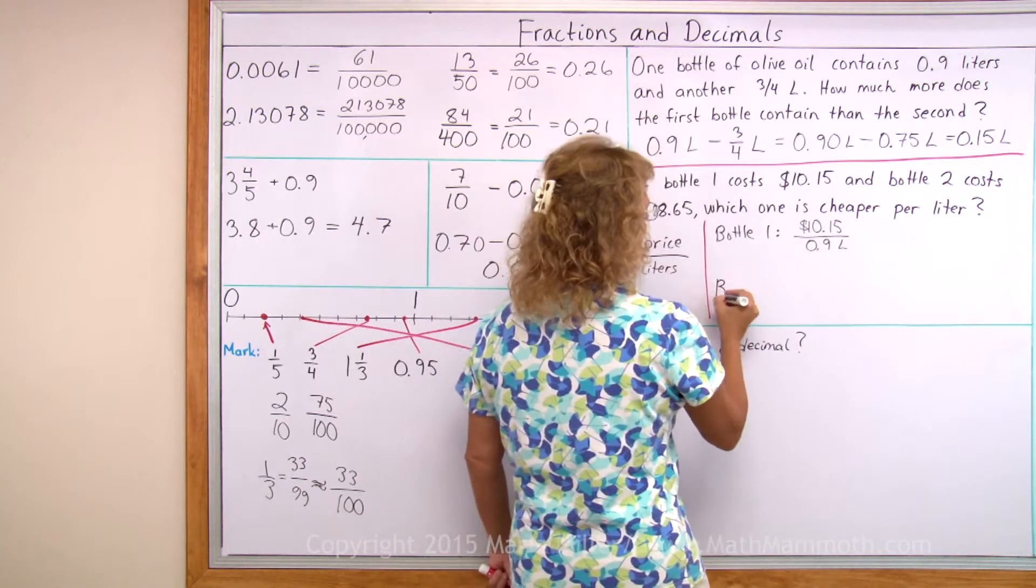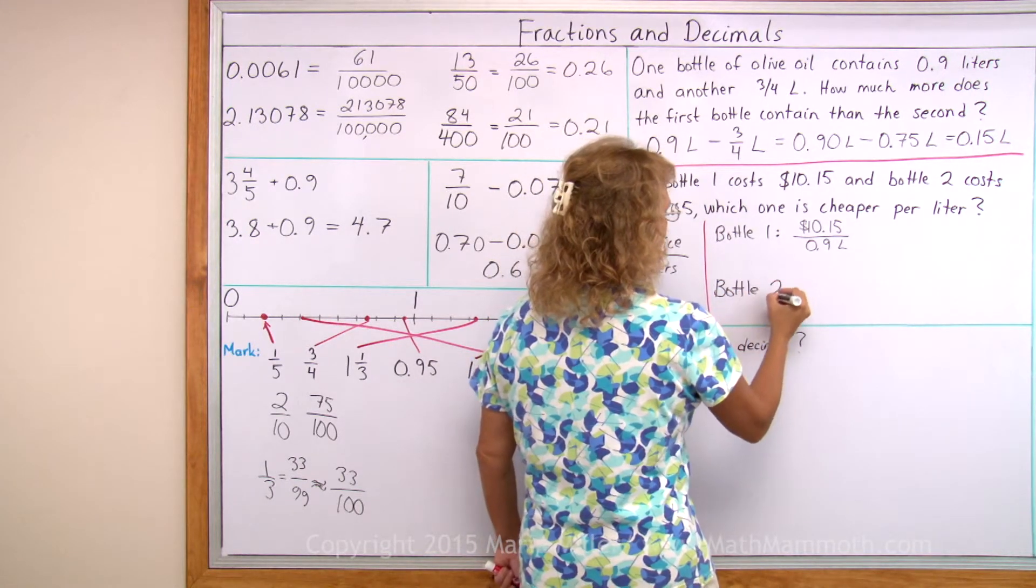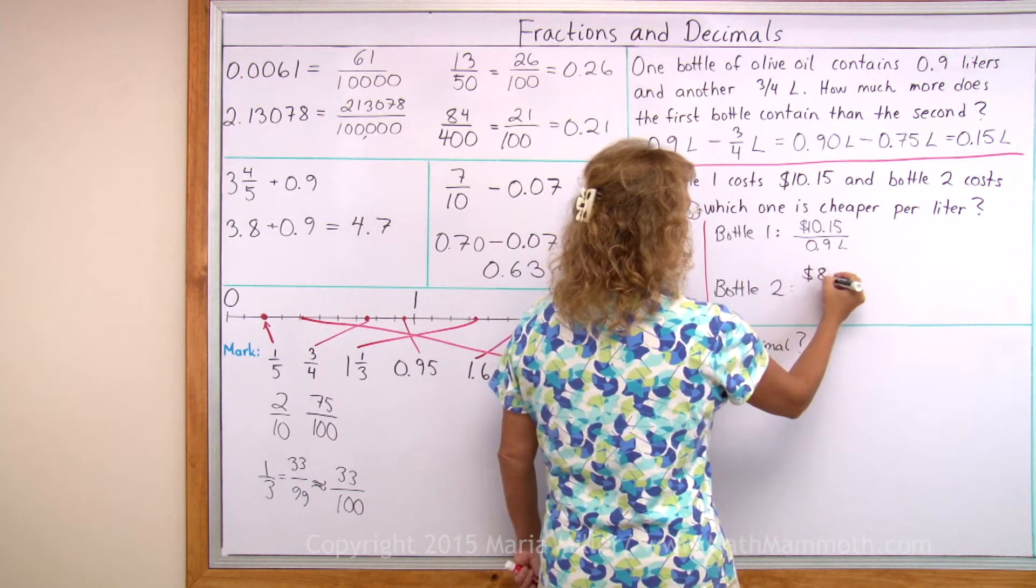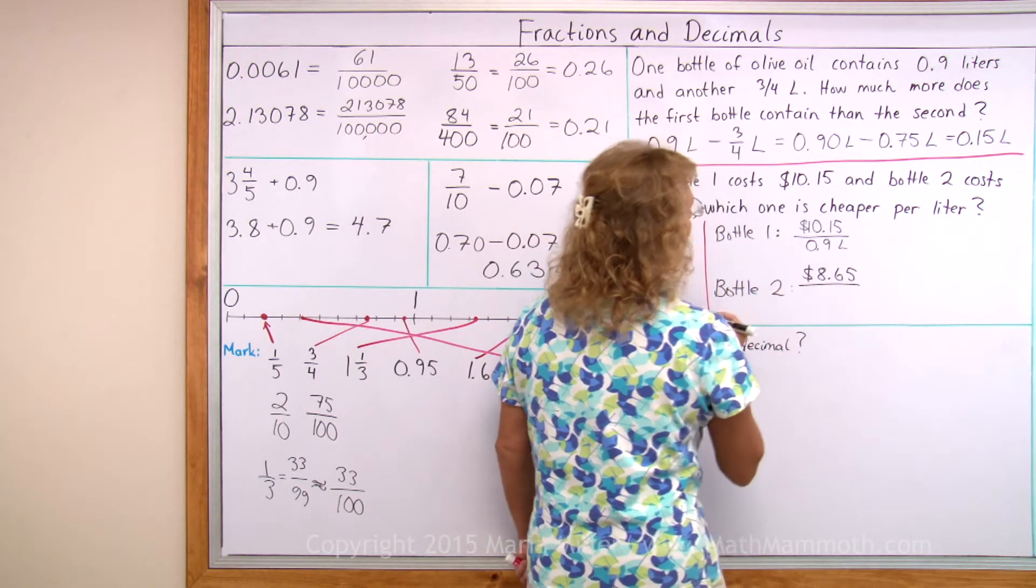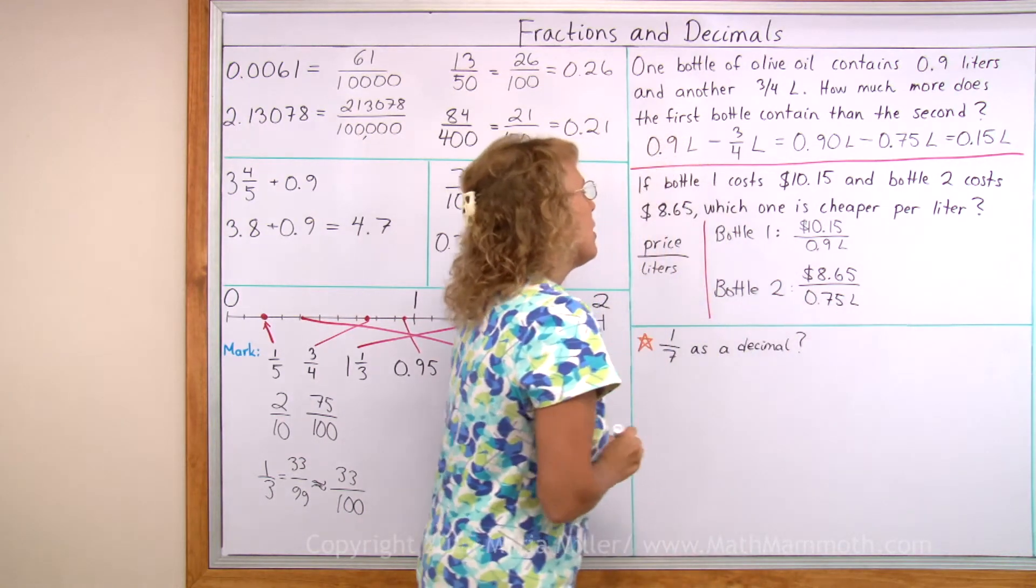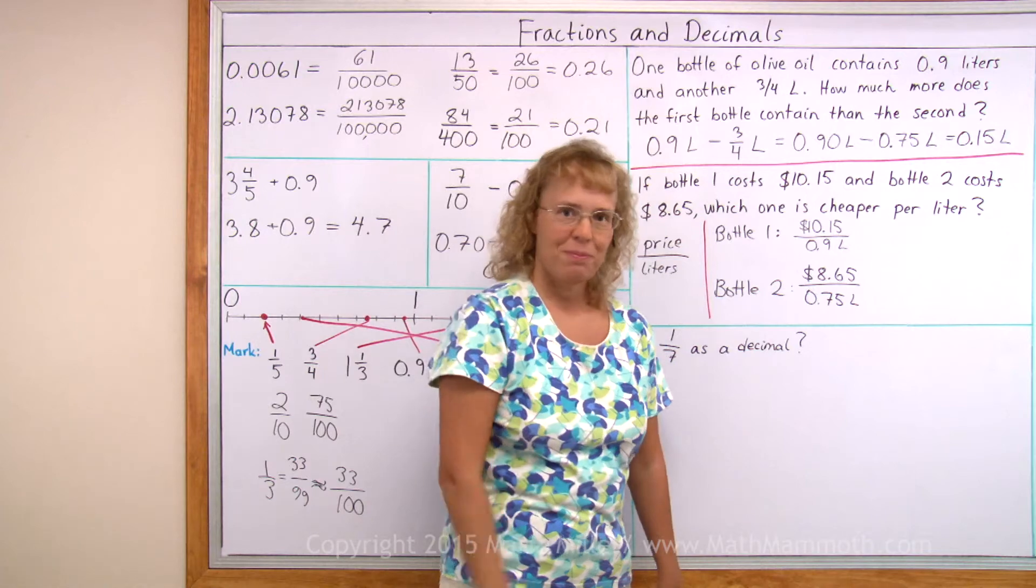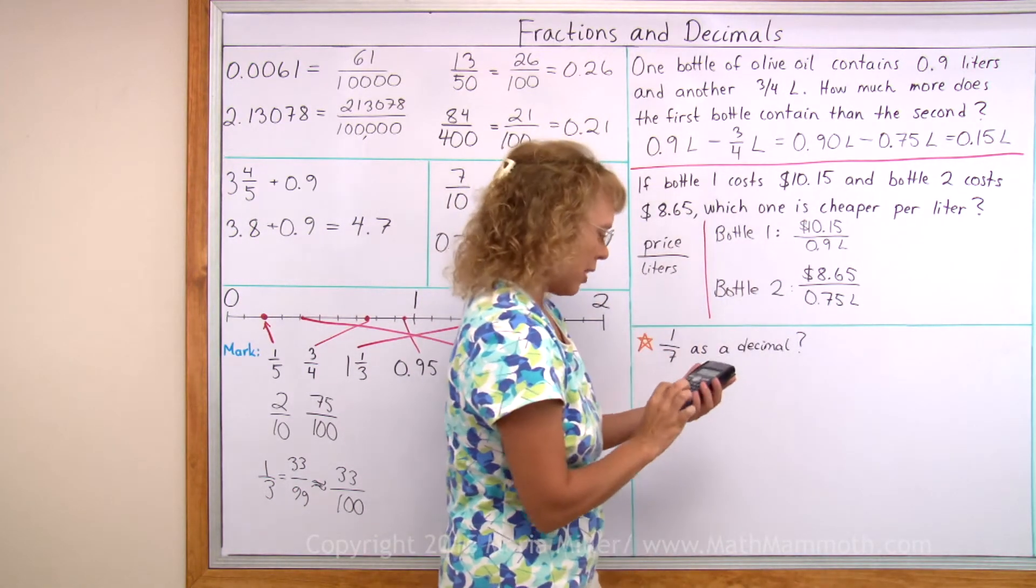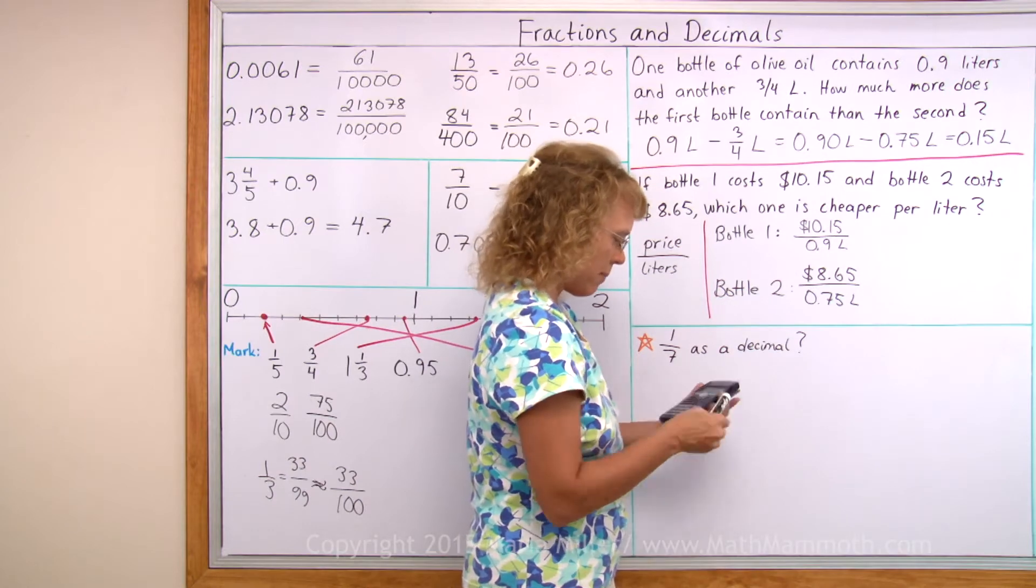And for bottle two, I write the same expression. This time its price is $8.65 and its volume is 0.75 liters. And now I take the calculator. And I divide using the calculator.